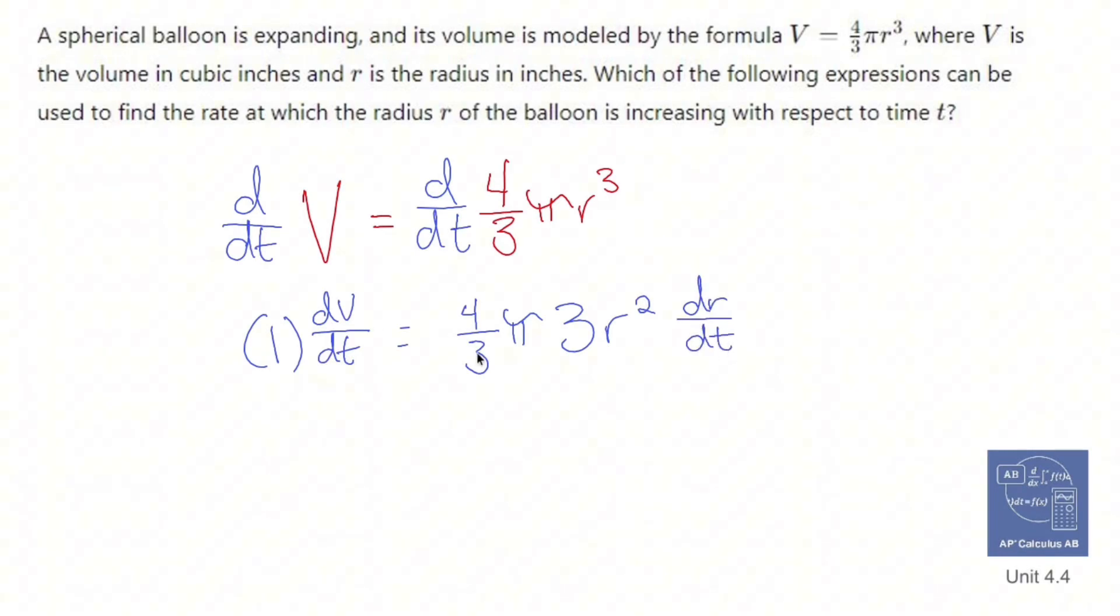So the nice thing about this is the 3s are going to cancel out. The 1 doesn't really need to be there. And you have dV/dt equals 4 pi r squared dr/dt. Now, they want us to use an equation that's solved for dr/dt. So I'm going to divide both sides by 4 pi r squared.